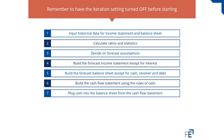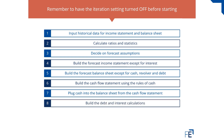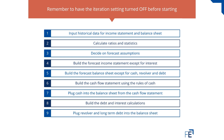We now take cash from the cash flow statement and put that into the balance sheet — that's one of those missing items dealt with. We then build the debt and interest calculations, and put the debt items into the revolver and long-term debt in the balance sheet. Your balance sheet is now done.